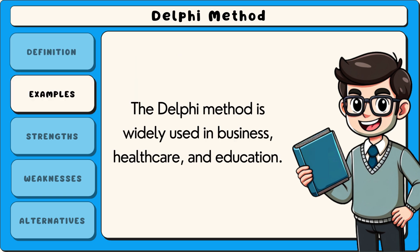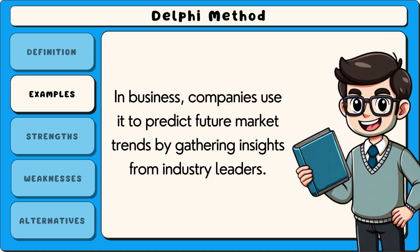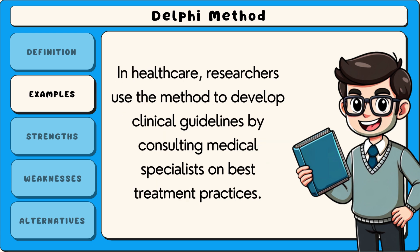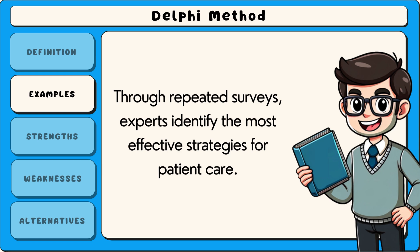The Delphi method is widely used in business, healthcare, and education. In business, companies use it to predict future market trends by gathering insights from industry leaders. For example, a technology company might ask experts to forecast the demand for artificial intelligence in the next decade, refining their predictions through multiple rounds. In healthcare, researchers use the method to develop clinical guidelines by consulting medical specialists on best treatment practices. Through repeated surveys, experts identify the most effective strategies for patient care.